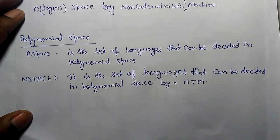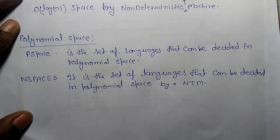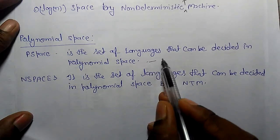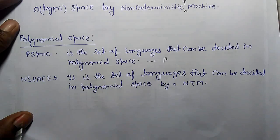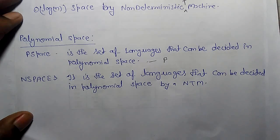The polynomial space, which is PSPACE, is a set of languages that can be decided in polynomial space and that is analogous to P. NSPACE is a set of languages that can be decided in polynomial space by non-deterministic Turing machine.